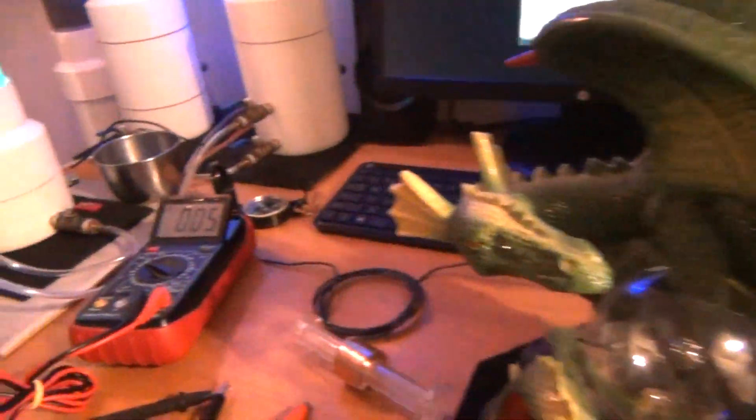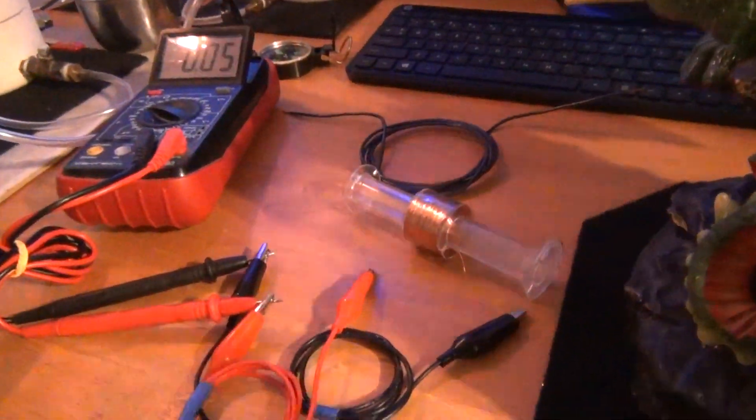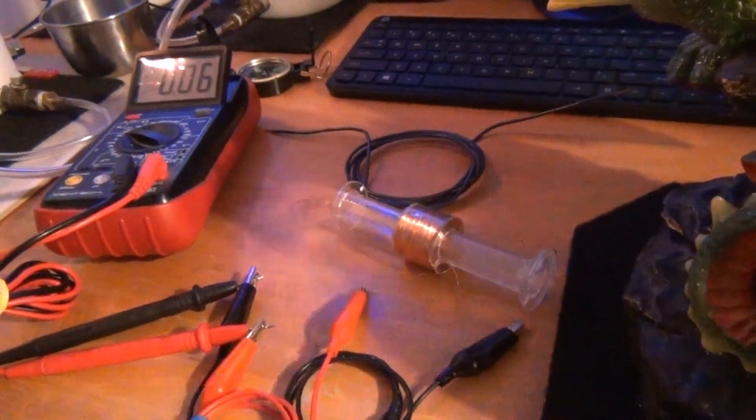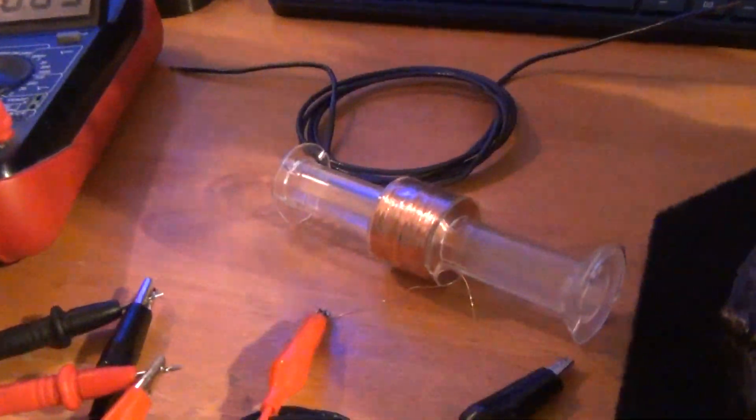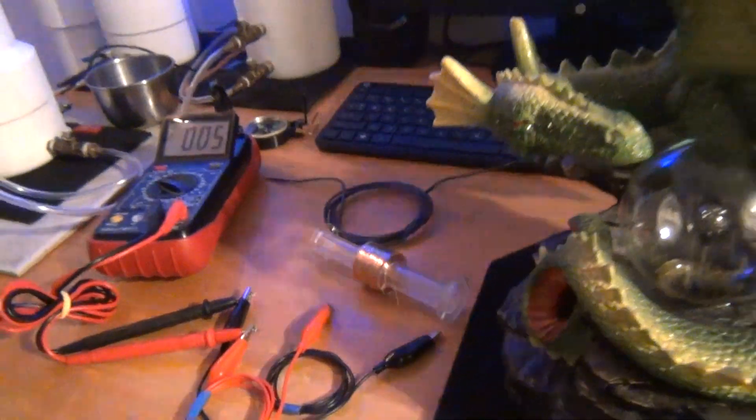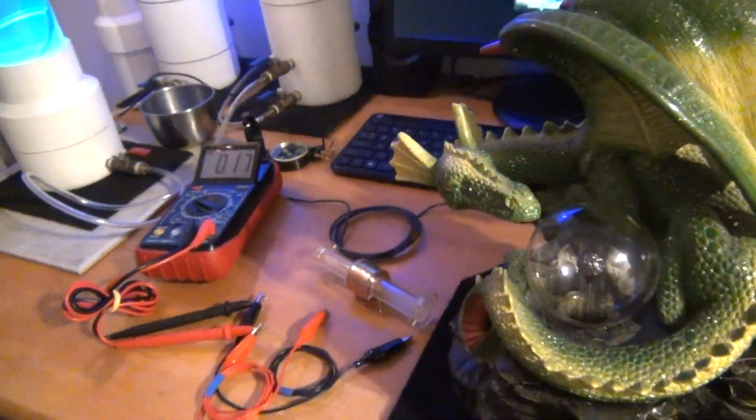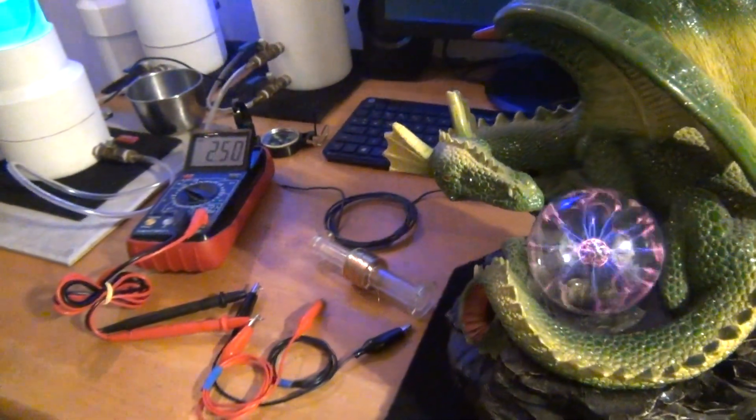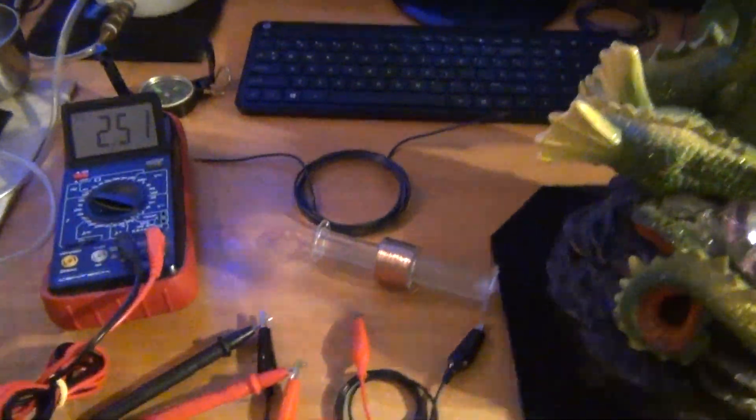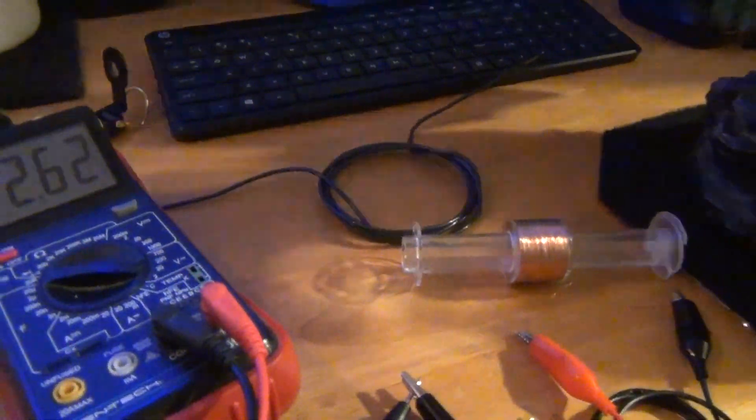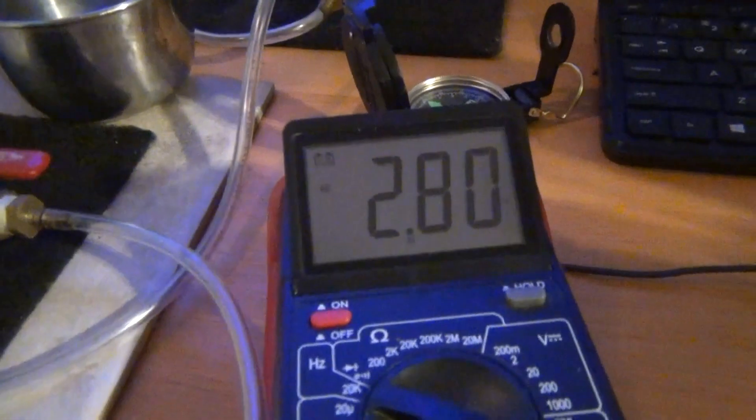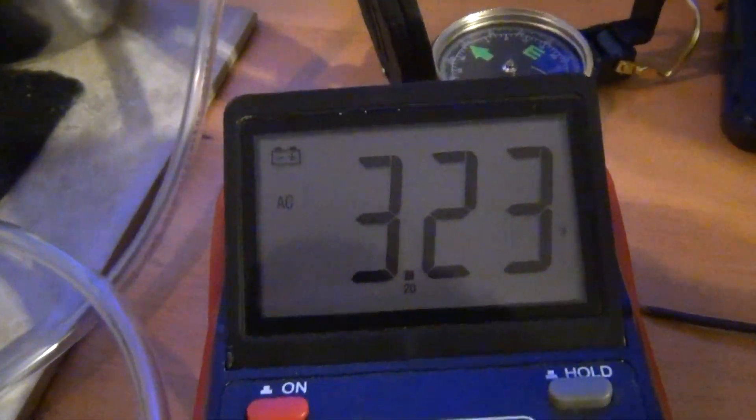Now I'm going to turn this plasma globe on. It's going to induce a current in that coil I've got sitting right there. Let me turn this thing on so you can see. So wirelessly the coil picks up the electricity. And you can read it in the AC current measurement here on my voltage meter.